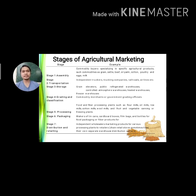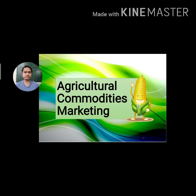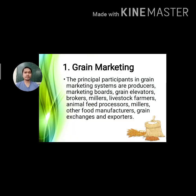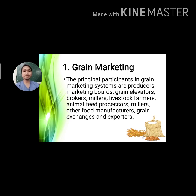Agricultural commodities marketing covers several types. The first is grain marketing. The principal participants in grain marketing systems are the producers, marketing boards, grain elevators, brokers, millers, livestock farmers, animal feed processors, other food manufacturers, and grain exchanges and exporters.